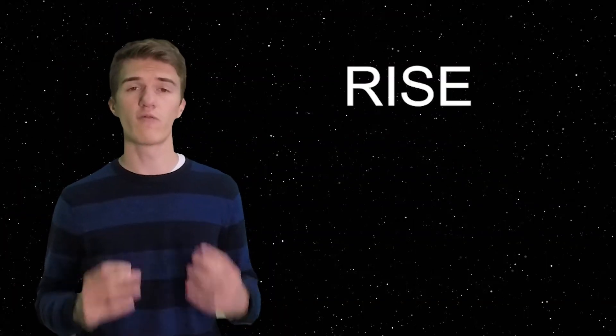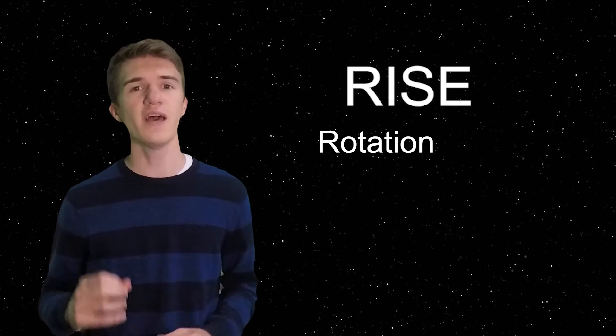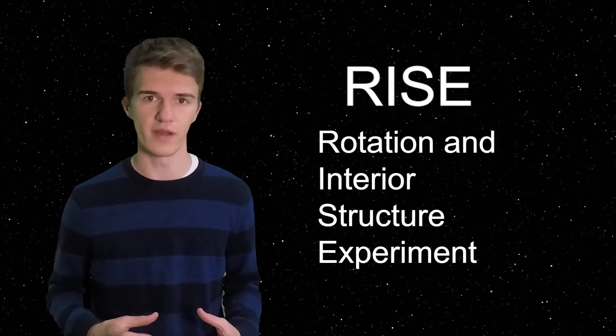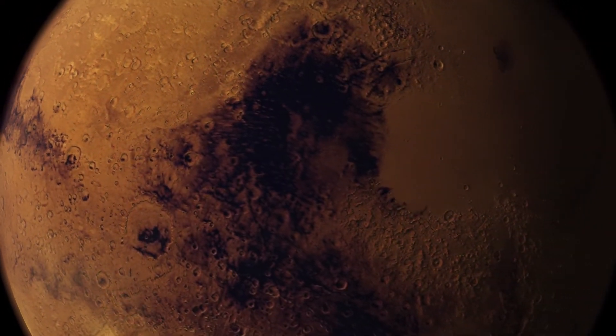The third experiment is called RISE, which stands for the Rotation and Interior Structure Experiment. This is going to try and look at how exactly Mars is changing in its orbit. For example, every about 18 Earth years, Earth wobbles a little bit in its orbit. However, once every Mars year, Mars wobbles in its orbit.